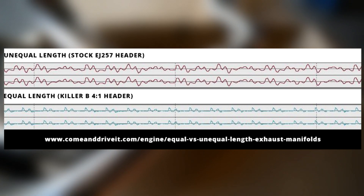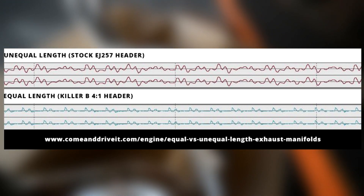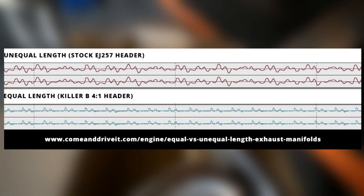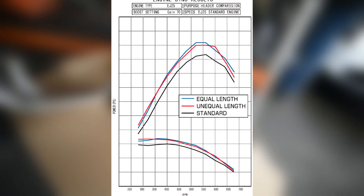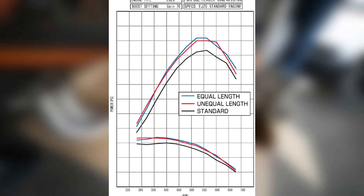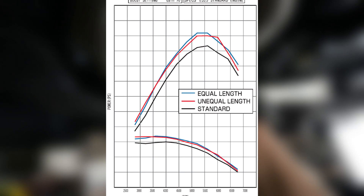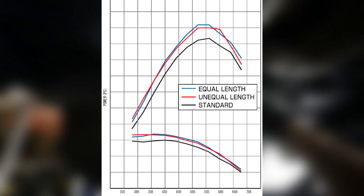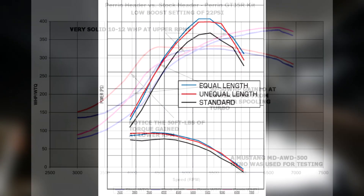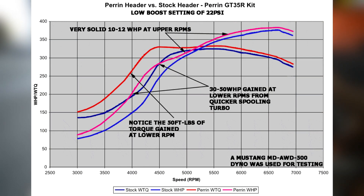On equal length headers, there is no collision of exhaust gas pulses, which increases efficiency and allows a twin scroll turbo setup to further reduce turbo lag and increase efficiency and overall performance. From a reliability standpoint, equal length headers also allow for a more balanced spread of exhaust temperatures, as well as a reduced chance of knocking or detonation, which is the cause for a good majority of EJ engine failures.